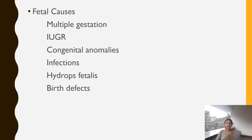Now let us see the fetal causes. These include multiple gestation — in which the chance for death is higher compared to single-term pregnancy — intrauterine growth retardation, congenital anomalies, infections, hydrops fetalis, and birth defects. Hydrops fetalis is a condition occurring due to RH incompatibility.